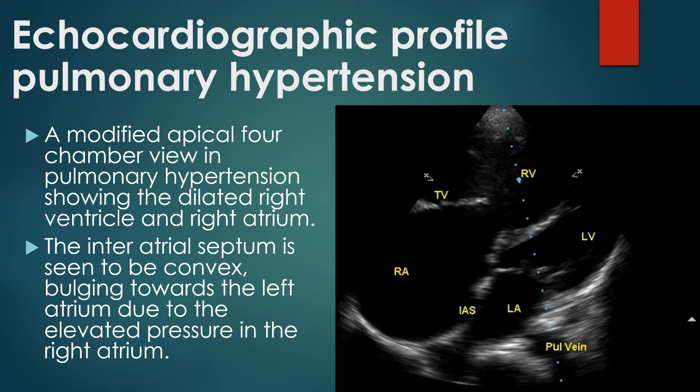A modified apical 4-chamber view in pulmonary hypertension shows the dilated right ventricle and right atrium. The inter-atrial septum is seen to be convex, bulging towards the left atrium due to elevated right atrial pressures. An echo dropout is seen in the region of the fossa ovalis due to the thinness of the stretched septum in that region.